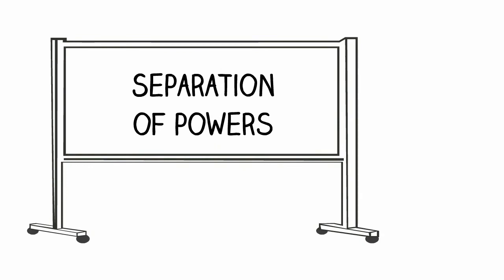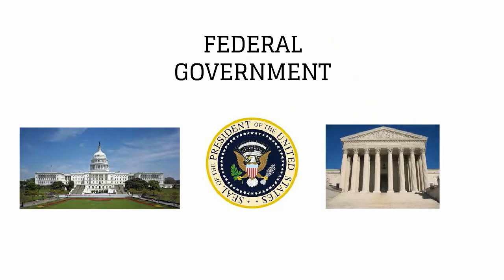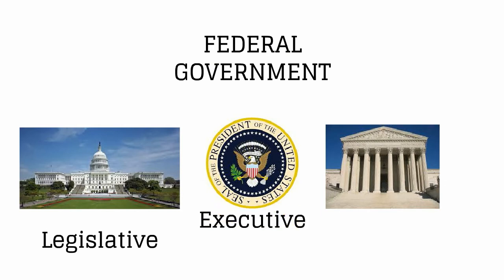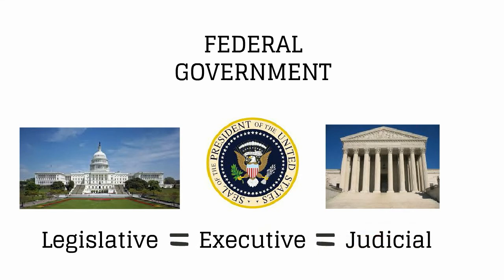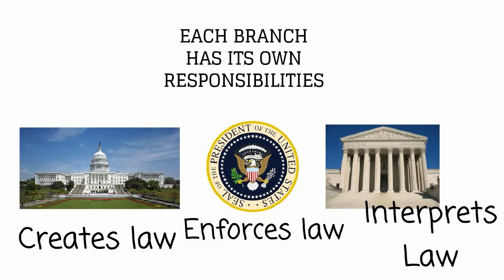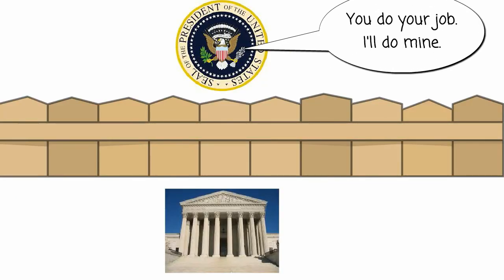The court based its decision on the principle of government separation of powers. The federal government in the United States is divided into three branches. The three branches are the legislative branch, which includes Congress; the executive branch, which includes the President of the United States and his staff and agencies; and finally, the judicial branch, which includes the federal courts. Separation of powers tells us that no branch is more important than any other branch of government, and that each branch has its own responsibilities and powers.